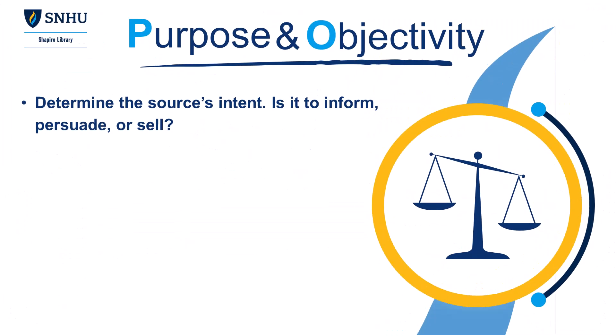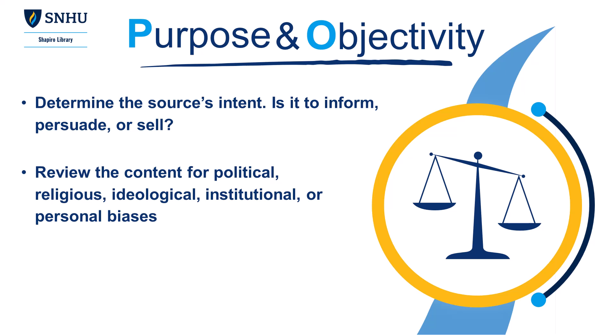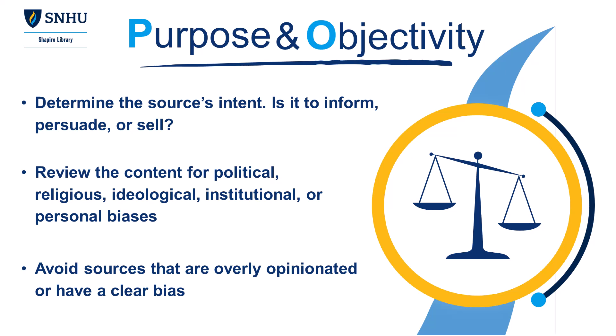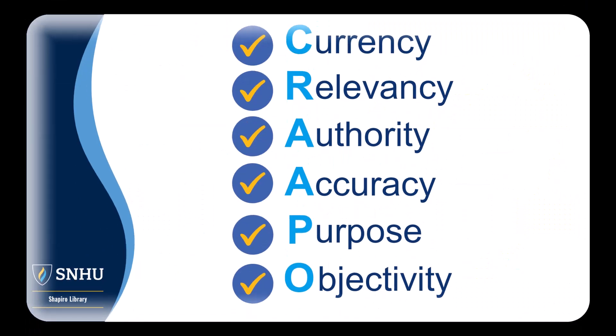Purpose and Objectivity. Determine the source's intent — is it to inform, persuade, or sell? Review the content and see if you can identify any political, religious, ideological, institutional, or personal bias. Be aware of whether the source is attempting to influence opinions rather than present balanced information. Avoid sources that are only opinionated or have a clear bias, unless you acknowledge the author's viewpoint.